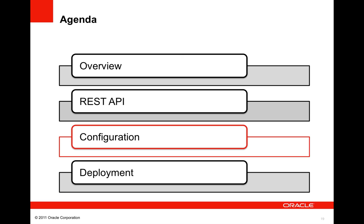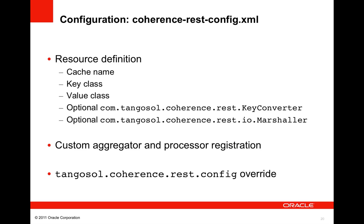Configuration for the REST API is contained in two XML files. The first, coherence-rest-config, contains definitions of the resources you'd like to expose via REST. For each resource you must specify the containing cache name and the Java class names of the key and value classes. For key classes that can't automatically be converted to and from a string, you must implement and register a key converter. If using a custom marshaler, register it by Java class name. Custom aggregators and processors must also be registered by Java class name. By default, Coherence looks for the config file in the classpath and working directory, but you can override this using the tangosol.coherence.rest.config system property.